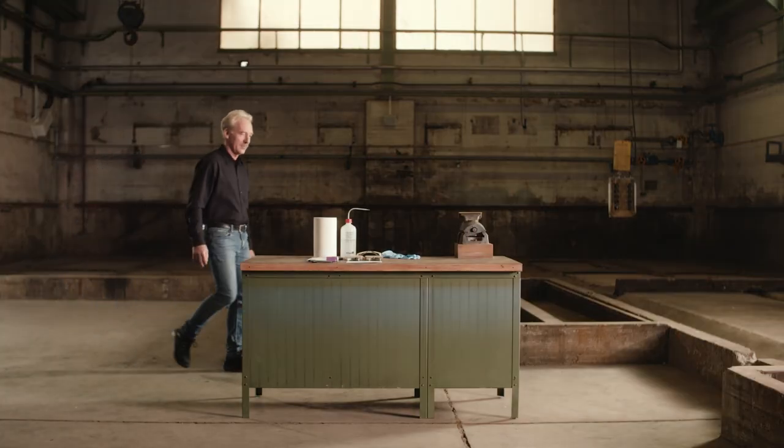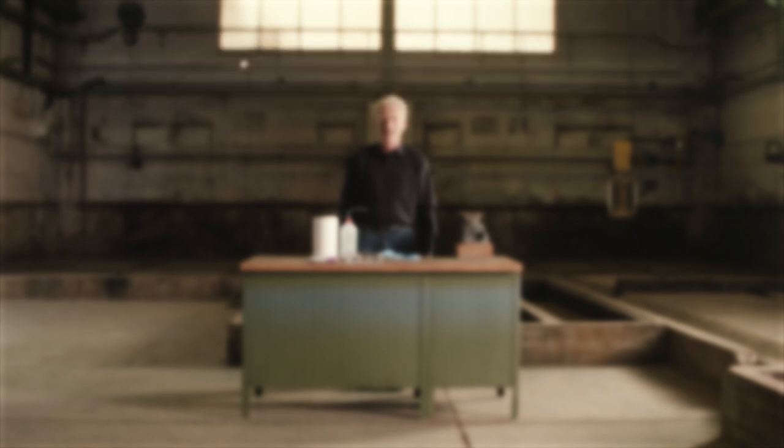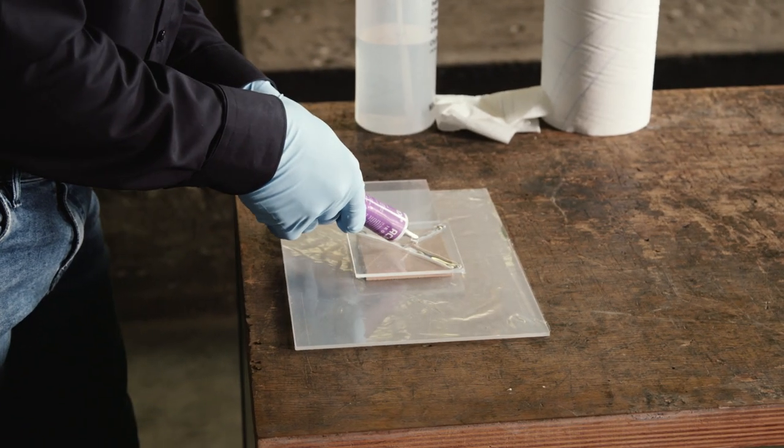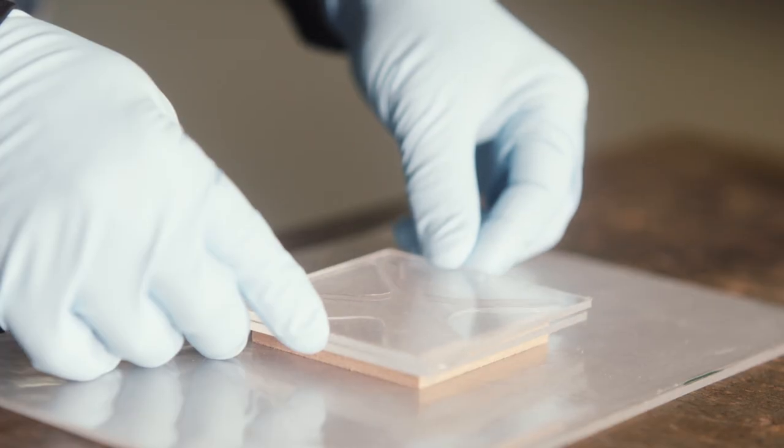Plexiglas is easy to glue. Specially developed adhesives are available for this purpose, which are colorless and do not cloud the material. The polymerization adhesive used in the video is light curing, particularly hard and weather resistant.